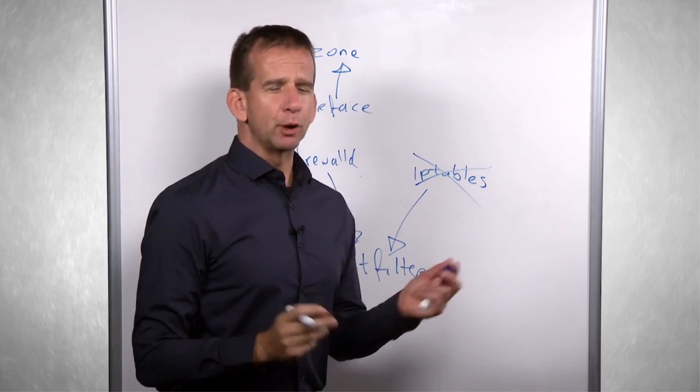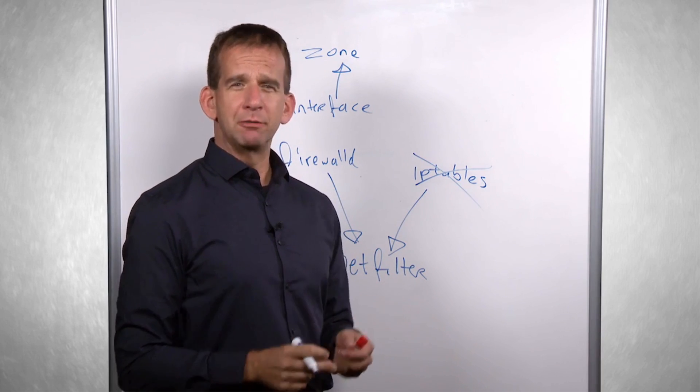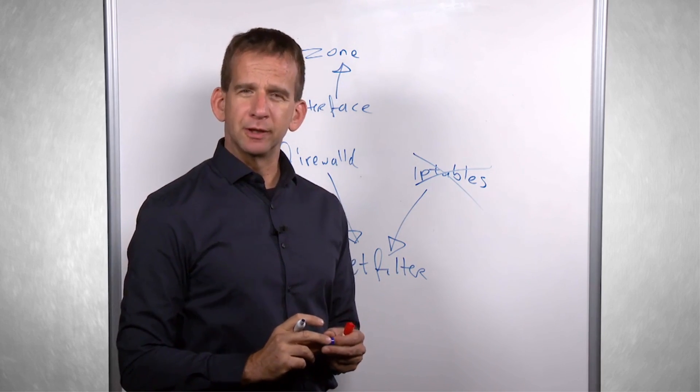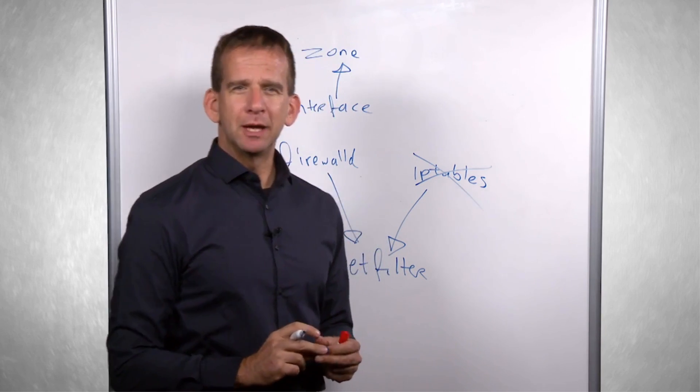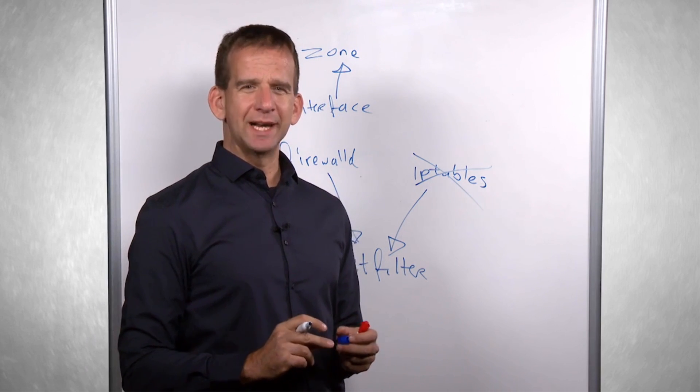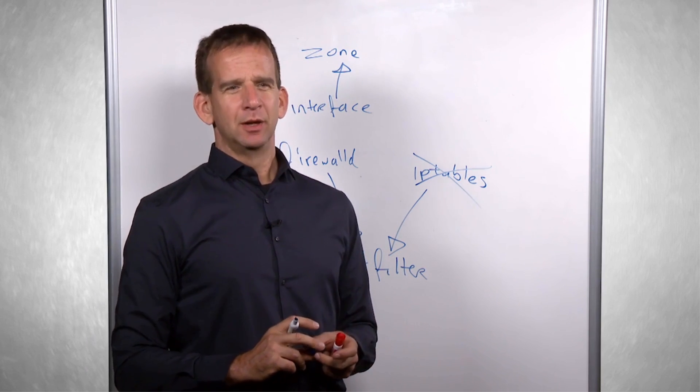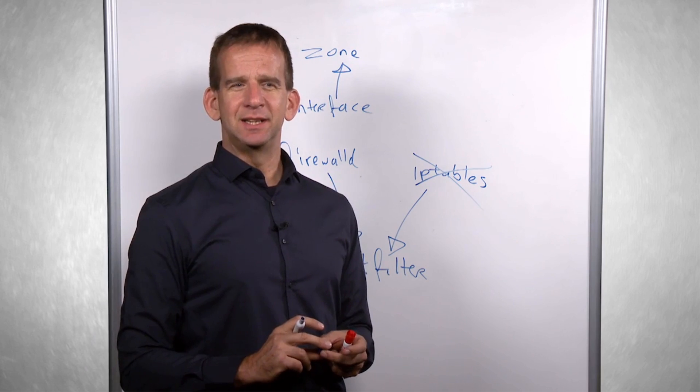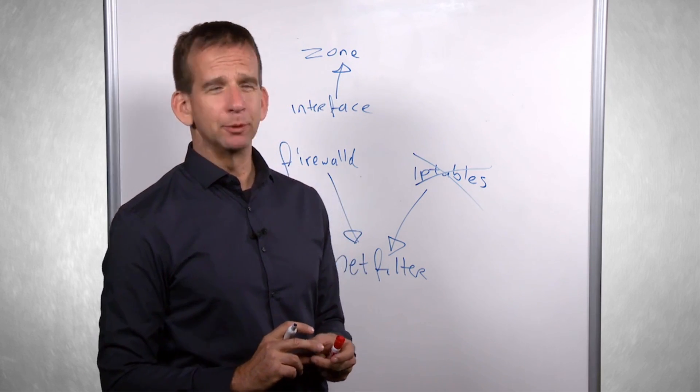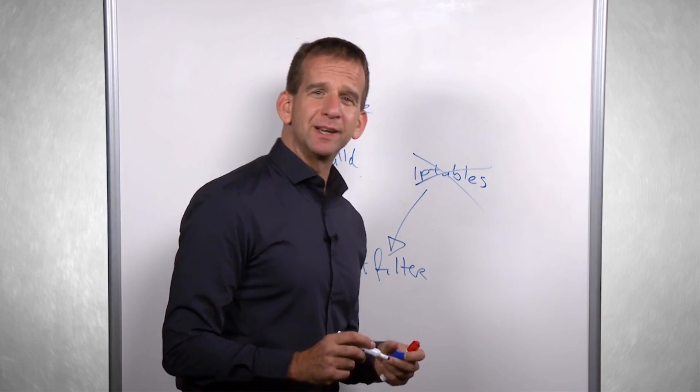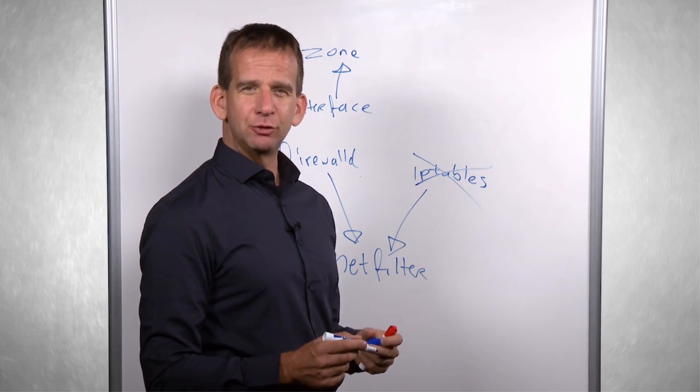That can be a private zone for your private network, in which almost nothing is filtered. It can be a public zone for a server that is connected directly to the internet, or it can be a demilitarized zone for example. So that would be the first thing to start with, to assign your interfaces to zones.